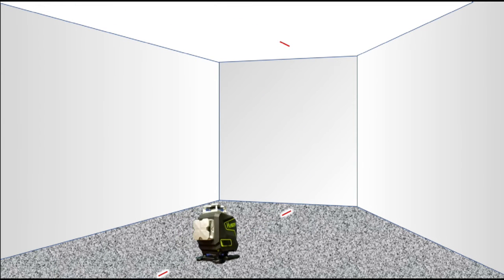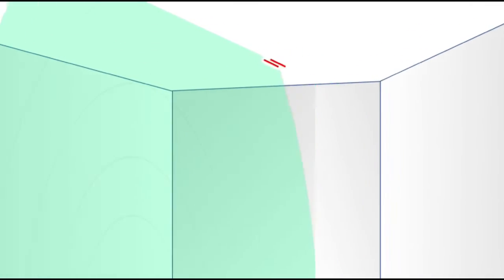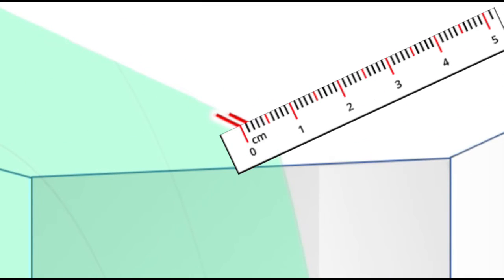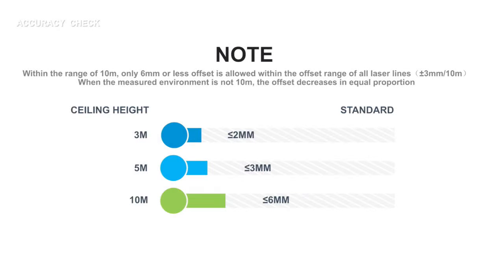Now turn the laser level around 180 degrees and make sure it is aligned to the marks on the floor. Then make a new mark on the ceiling where the laser line is projected and measure the distance between those marks. According to this chart from Hupar, the specification for accuracy of the vertical plumb line is 6 millimeters or less at 10 meters, 3 millimeters or less at 5 meters, or 2 millimeters or less at 3 meters.